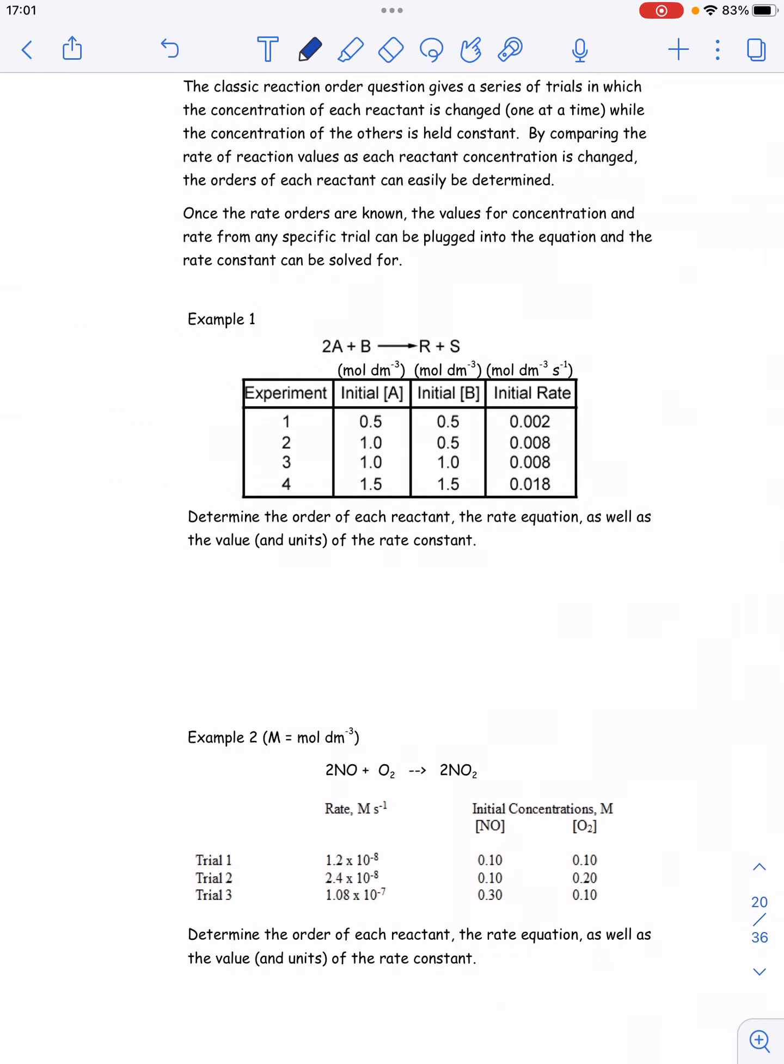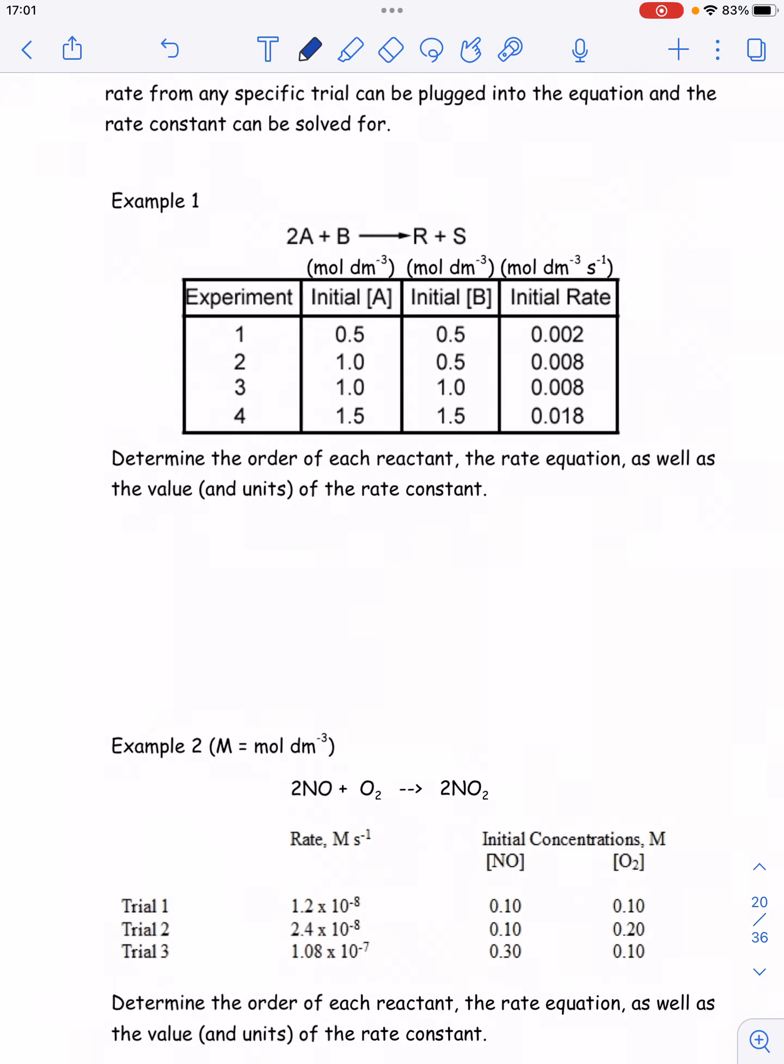Okay, let's work through some order of reaction practice questions. The thing to always do is to look for two experiments or trials, and you want to find two trials, ideally, where the concentration of one component is not changing and the concentration of the other component is being changed by some easy factor. Usually you can find one where they've doubled it. Sometimes they'll be more annoying than that, but usually that's kind of the standard.